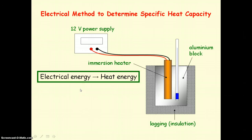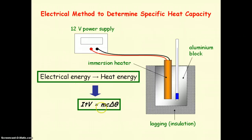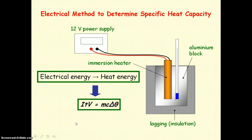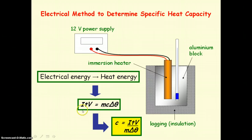From AS theory, electrical energy transferred equals ITV. Assuming 100% efficiency, all that electrical energy is transferred to heating the substance. So to find C, we rearrange to get C equal to ITV divided by M divided by delta theta.